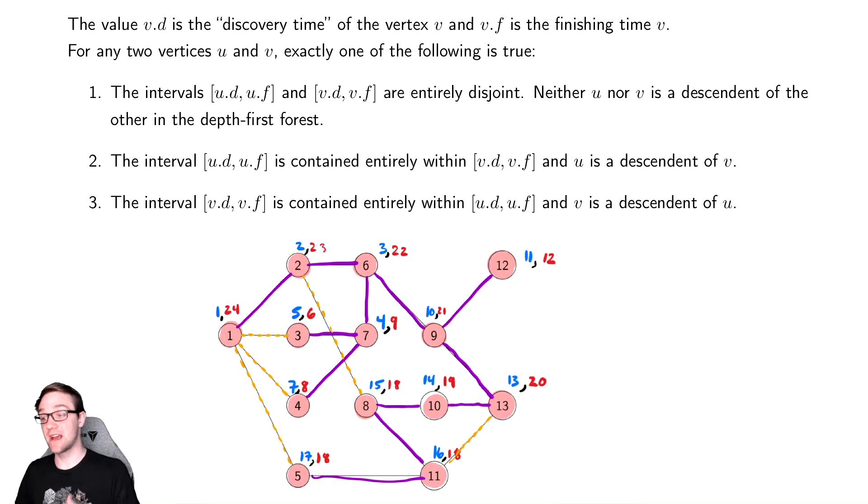We can look at that for ones that actually have trees that's a little more interesting. So something like seven that has more than one child, five and six are sandwiched between it and seven and eight are also sandwiched between it. Also notice that things that are on different branches, things like 12 and 13 have no overlap.